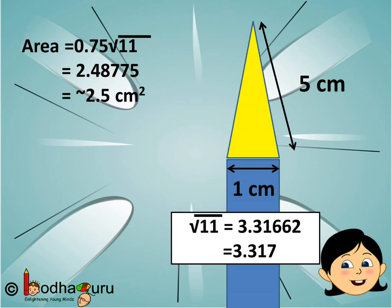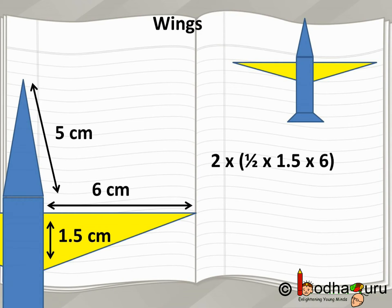In part 1, we calculated the area of the triangular nose of the plane. Now, let's calculate the area of the remaining parts. Now, let us move to the wings.